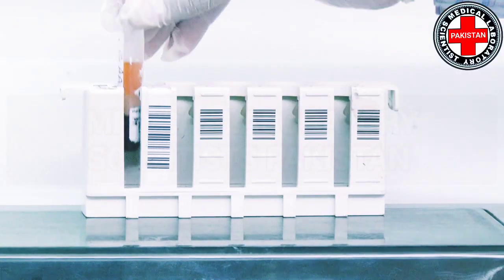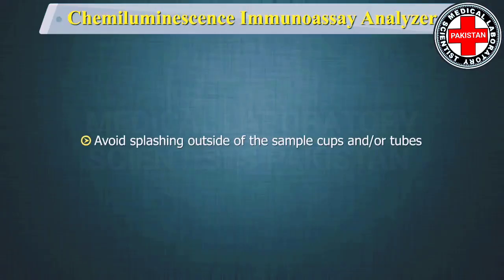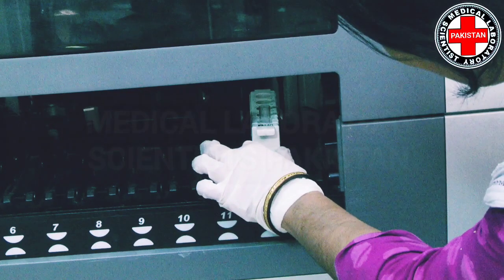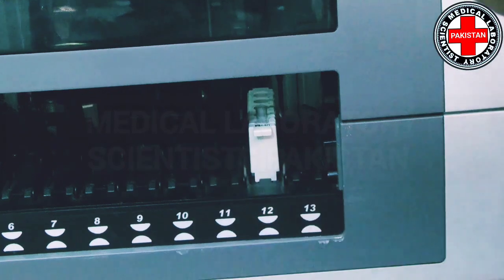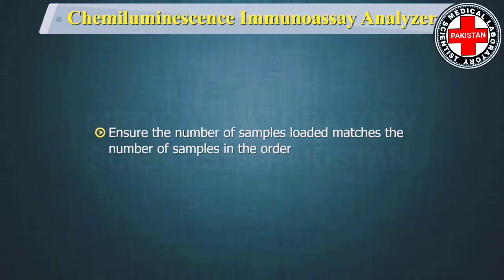You are responsible for loading the correct sample in the correct position. Place the sample in the sample carrier. When loading sample cups or tubes, ensure that you have pushed them completely down into the sample carriers and that they are not tilted. Avoid splashing outside of the sample cups or tubes. Load the carrier into a priority section or a routine section by pushing it in until the indicator illuminates. Ensure the number of samples loaded matches the number of samples in the order.